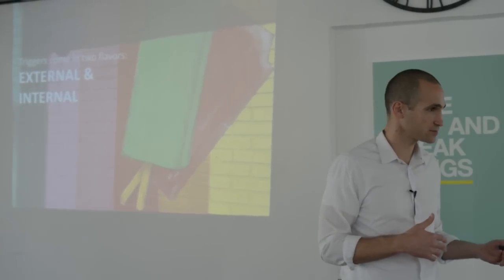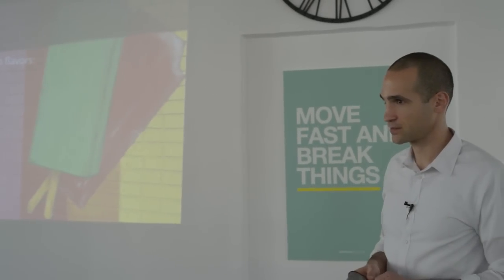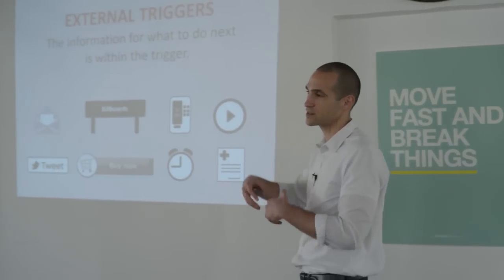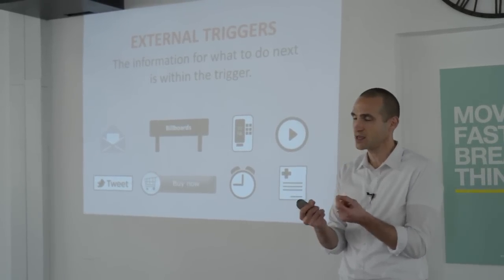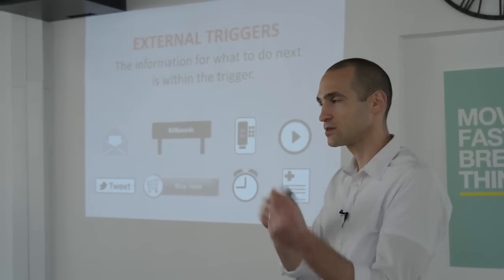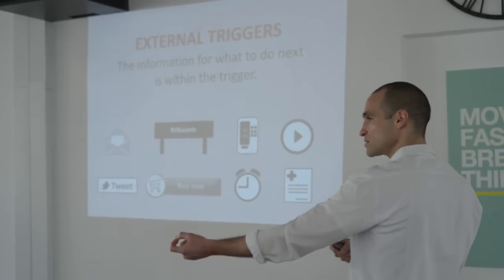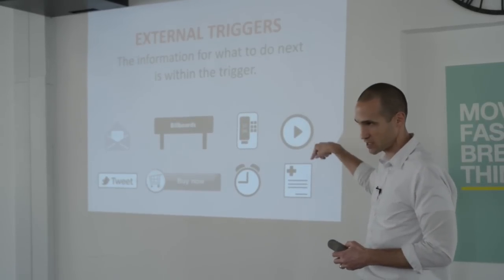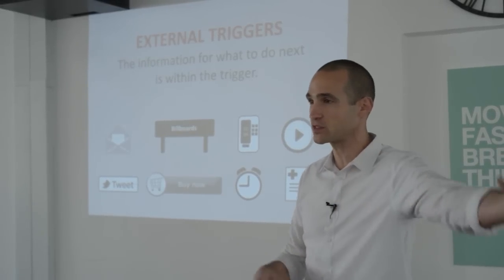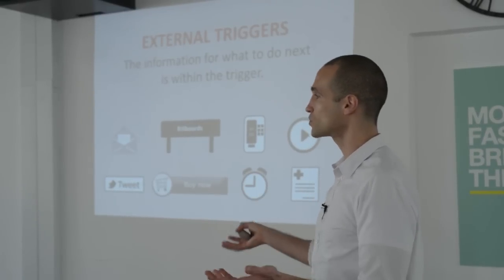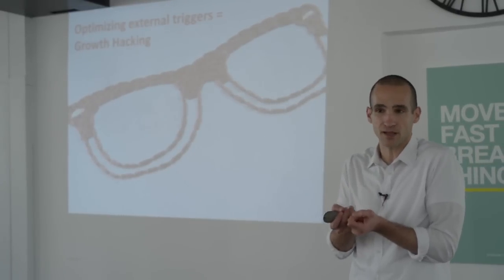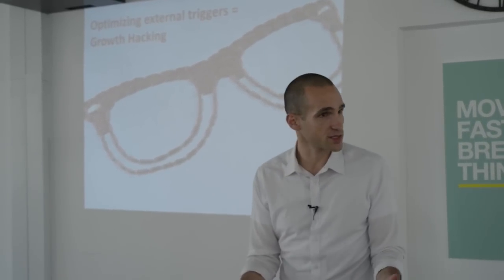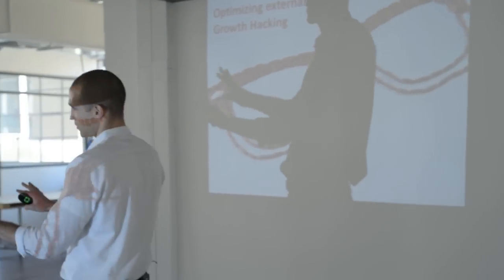So that foundation that we build new behaviors on top of are triggers. And these triggers come in two forms. External triggers and internal triggers. External triggers you're going to be very familiar with. External triggers are things that call us to action with explicit messages. Things that the information for what to do next is in the trigger itself. Click here. Buy now. A billboard. Tweet this. Things that tell you what to do where the information is in the trigger itself. A police officer directing you. Word of mouth that your friend tells you this is a great thing to go do. Those are all examples of external triggers.